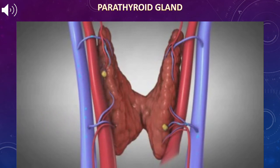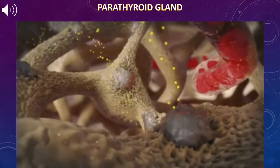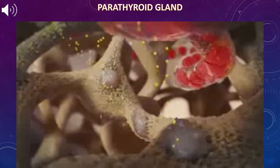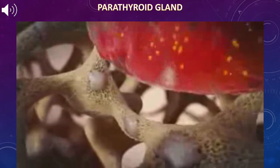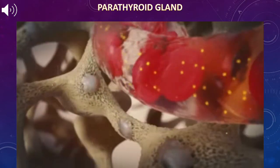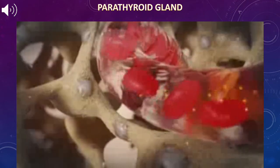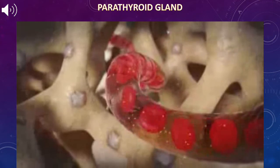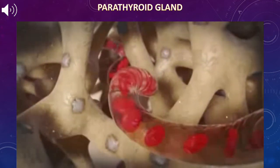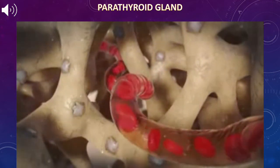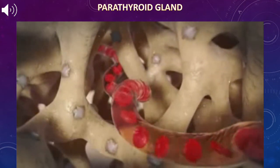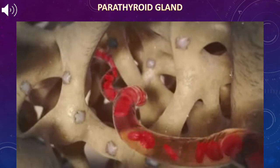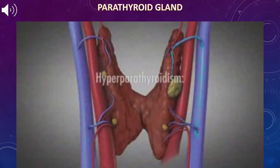Once all parathyroid tumors have been removed, the disease is cured. The process of bone destruction stops within minutes. Bone pain typically resolves within a few hours. The bones begin to regenerate within a few days and osteoporosis begins to improve. The excess calcium in the blood will normalize within a few hours, and most patients feel significantly better health as the risks of high blood calcium begin diminishing within days of the parathyroid tumor removal.